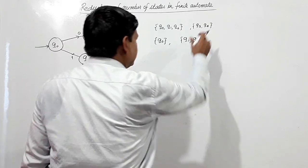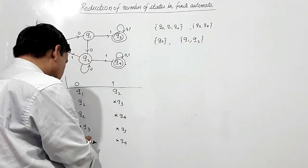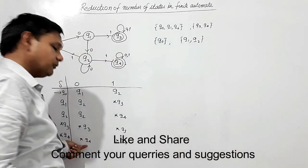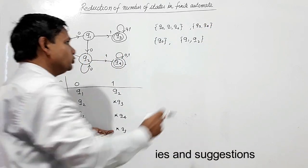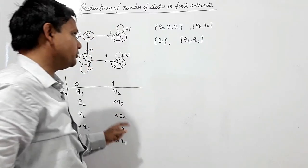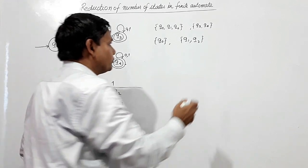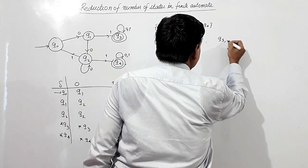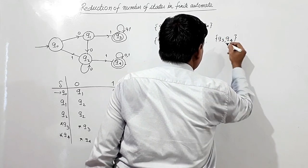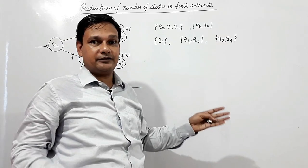Now we shall check Q3 and Q4. Q3 on 0 goes to Q3 and Q4 on 0 goes to Q4, so both are in the same set on 0. Q3 on 1 goes to Q3 and Q4 on 1 goes to Q4, so both remain in the same set on 1 as well. Therefore Q3 and Q4 can be kept in the same set.